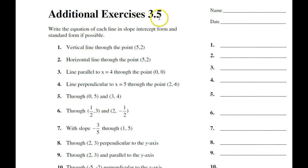Continuing on to section 5 of chapter 3, write an equation for each line in slope-intercept form and standard form, if possible. Here's where we get a chance to use all those formulas: standard form, slope-intercept, and a new formula called the point-slope form.